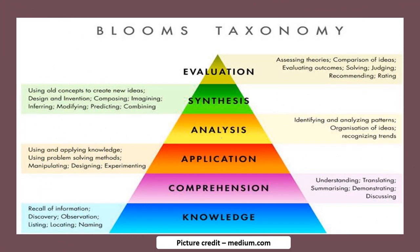Bloom's Taxonomy 6 Levels of Learning: Knowledge Level — recall of information, discovery, observation, listing, locating, naming. Comprehension Level — understanding, translating, summarizing, demonstrating, discussing. Application Level — using and applying knowledge, using problem-solving methods, manipulating, designing, experimenting. Analysis Level — identifying and analyzing patterns, organization of ideas, recognizing trends. Synthesis Level — using old concepts to create new ideas, design and invention, composing, imagining, inferring, modifying, predicting, combining. Evaluation Level — comparison of ideas, evaluating outcomes, solving, judging, recommending, rating.